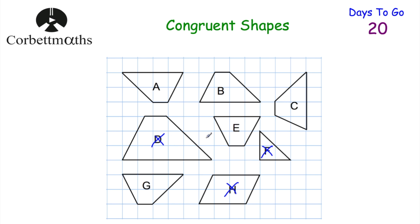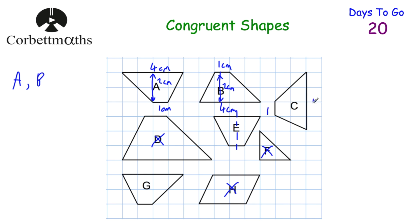We're left with trapeziums A, B, C, and G to compare. Looking at A: the parallel sides are 4 cm and 1 cm, and the height is 2 cm. B also has parallel sides of 1 cm and 4 cm with a height of 2 cm in the same configuration — so A and B are congruent. C also has 1 cm and 4 cm parallel sides with a height of 2 cm in the same arrangement. G likewise measures 4 cm and 1 cm with a 2 cm height. So A, B, C, and G are all congruent to each other.